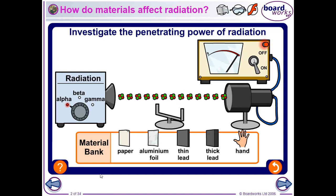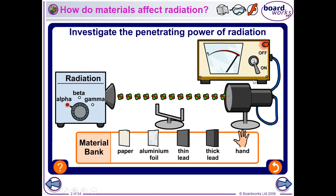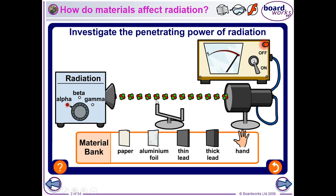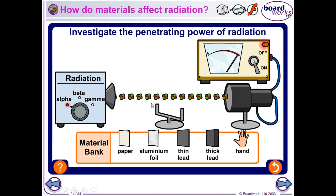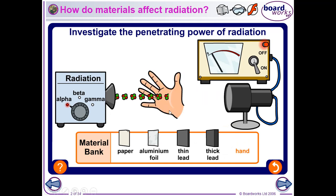We'll explore alpha particles first, and how putting different objects between the source and the detector affects the count rate picked up by the Geiger-Müller tube. This must be happening in a vacuum, because alpha particles get absorbed by just a couple of centimetres of air — so there are no air particles here. If I put my hand in front, the count rate drops to pretty much zero, because all the alpha particles are absorbed by the dead skin cells on the upper surface of my hand.